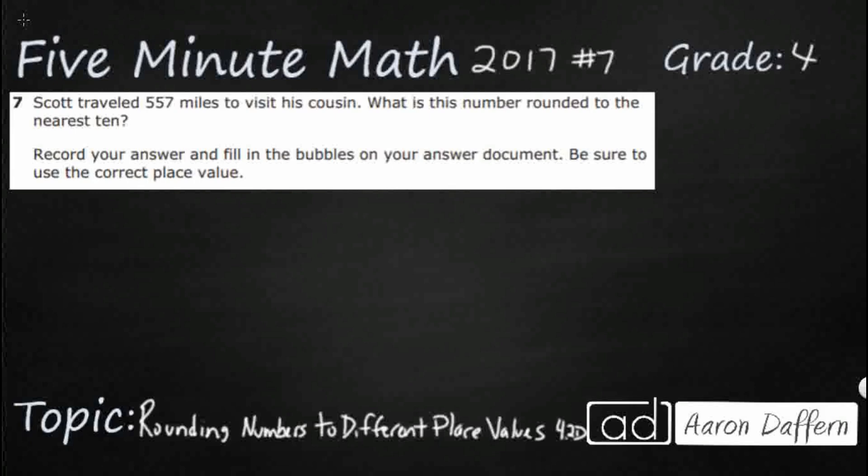So this is a seemingly simple problem here. We have Scott. He's going to travel 557 miles to visit his cousin. We need to round this number to the nearest 10. Now what makes it tricky is there are no answer selections to choose from. No A, B, C, or D. So we are going to need to be able to put this into our bubble sheet in the answer document.